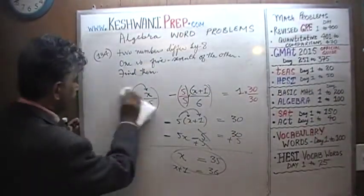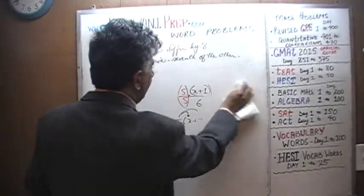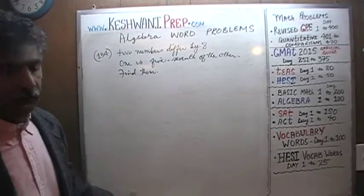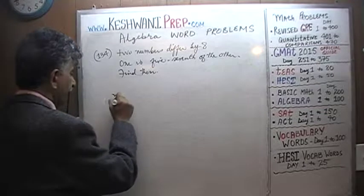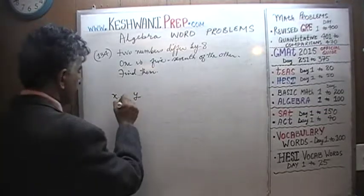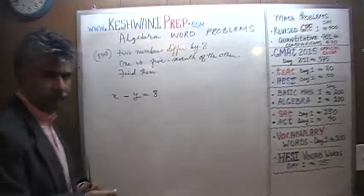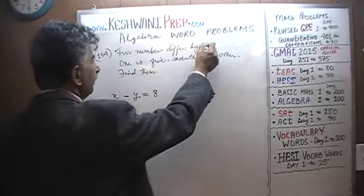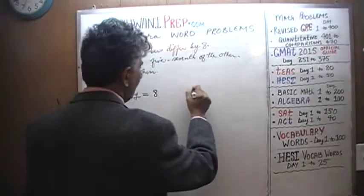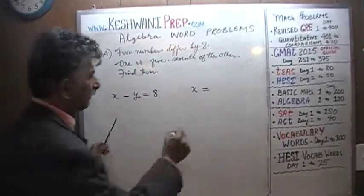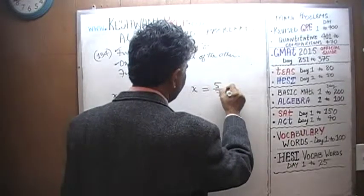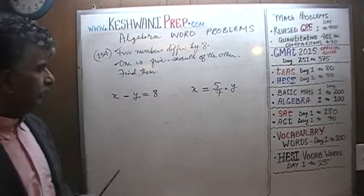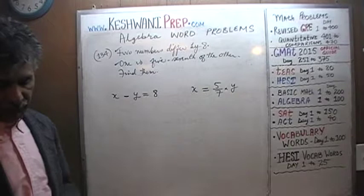We have two quantities and we're told they differ by 8. Let's call those two quantities x and y — their difference would have to be 8, so x minus y equals 8. Then we're told that one is 5 sevenths of the other, so x equals 5 sevenths of y. That's what we call it here.